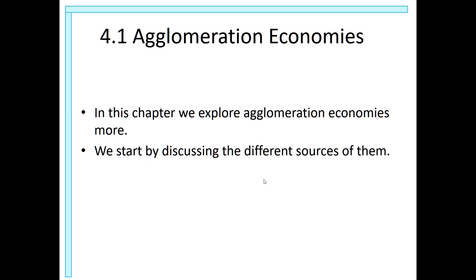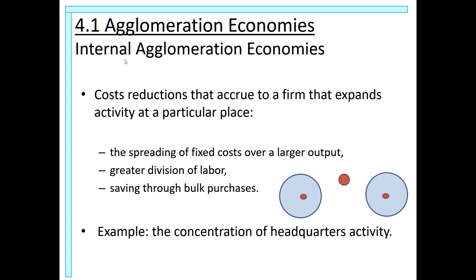The first source of agglomeration economies is internal agglomeration economies, which we also hinted about at the end of chapter two. The idea is the following: should we have one big firm that is somewhat far away from market A and market B, or should we have two firms — two smaller plants or branches — that are close to market A and B, minimizing transportation costs and staying close to buyers?